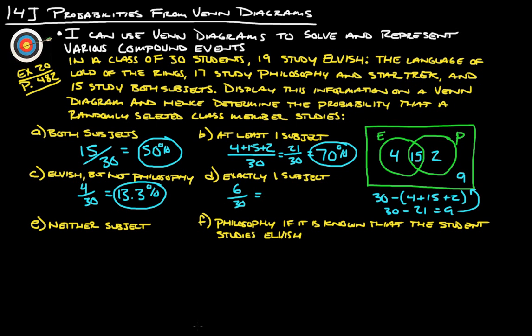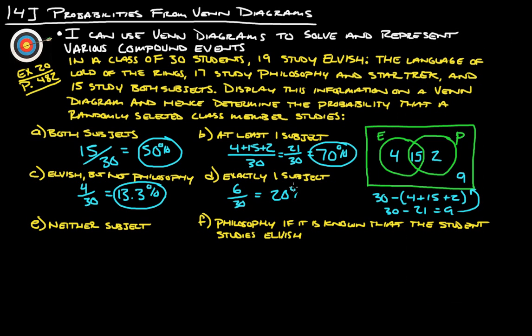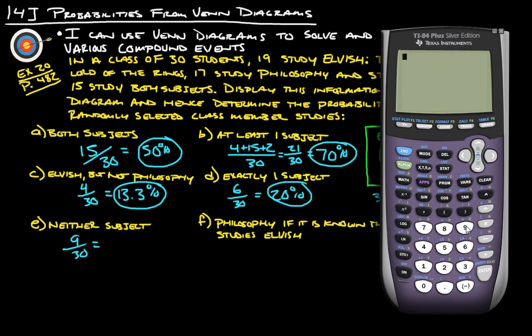Number of people that study neither subject would be these nine, so that's nine out of thirty. Nine divided by thirty, that's thirty percent.